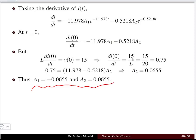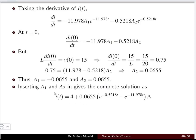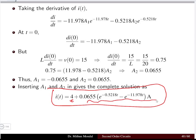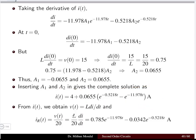With A1 and A2 determined, the complete current solution has 4 amperes as the steady-state and the transient part. The resistor current is obtained from the inductor voltage V = L·di/dt, and since the resistor is in parallel, i_R = V/20. We differentiate the main current equation using the inductor voltage relationship to find the current flowing through the resistor.